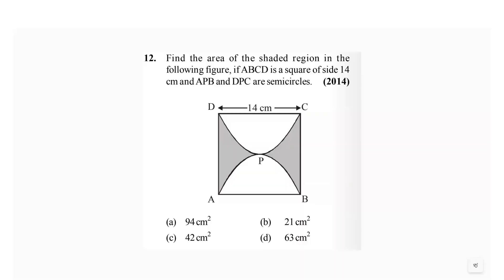Hello everyone, welcome to my channel. Let's discuss the challenging area questions like you can see on the board. Now here in this question, they have given us: find the area of the shaded region in the following figure. If ABCD is a square of size 14 centimeter and ABP and DPC are the semicircles.